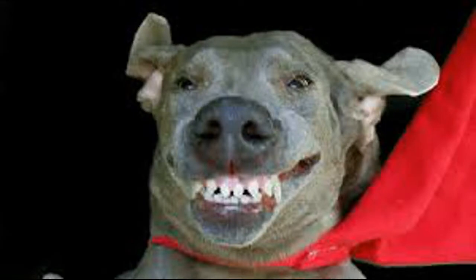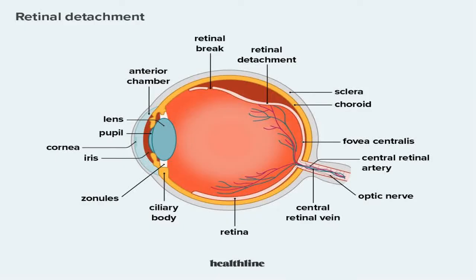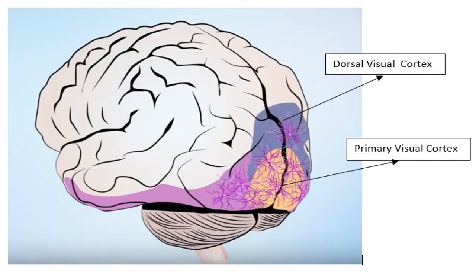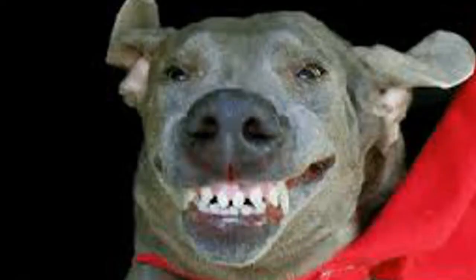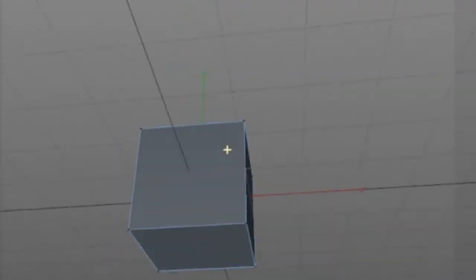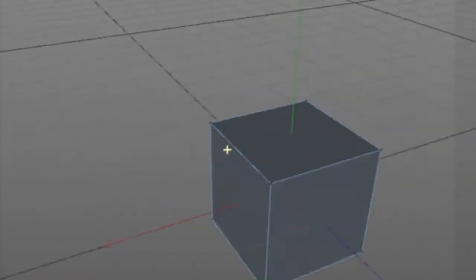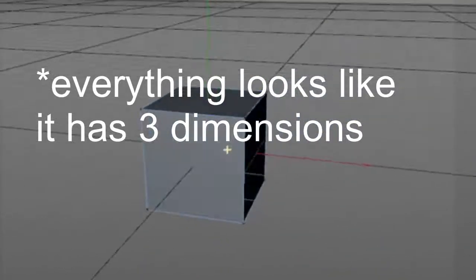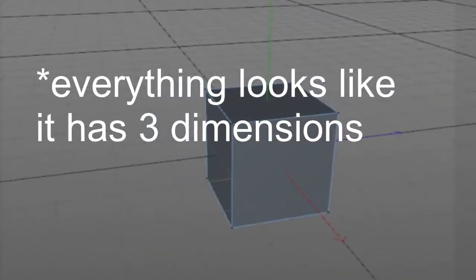One thing you have to know in order to understand the topic of this video is that animals with retinas will always see 2-dimensional images. The sense of the third dimension is only because their brains can detect depth. Think of it like a 3-dimensional computer simulation — the screen is only 2-dimensional, but everything looks like it has dimensions.